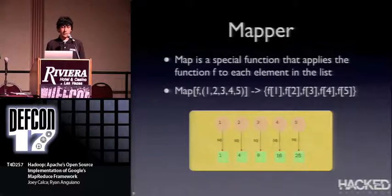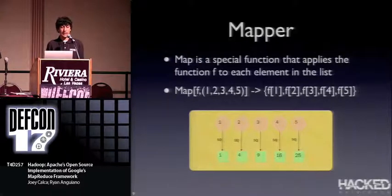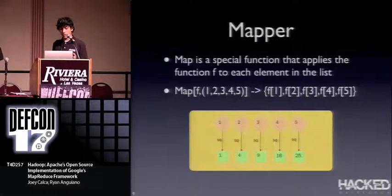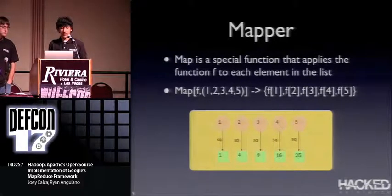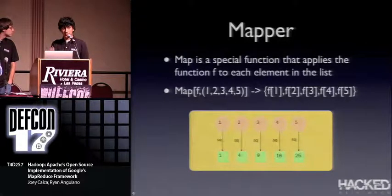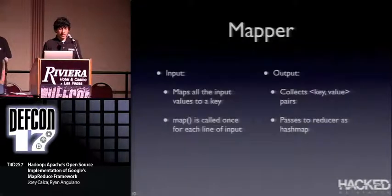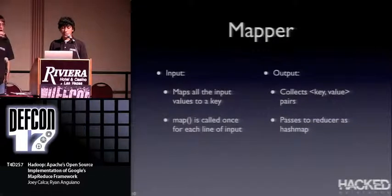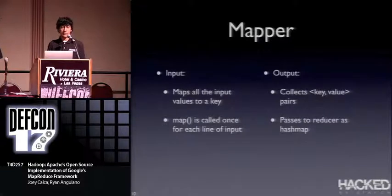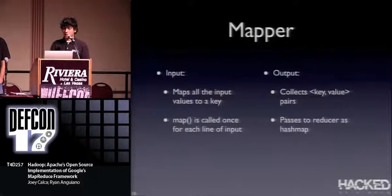A mapper is basically a special function that applies function f to each element in the data. The algebraic expression is map(f) applied to every single piece of data. You take your input and map all your values to a key. The map function is called one time for each input line, and it outputs one key-value pair as a hash map to the reducer.